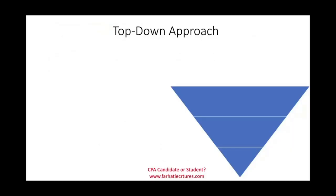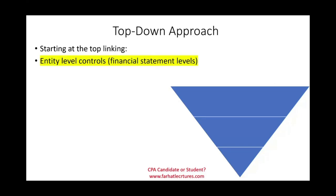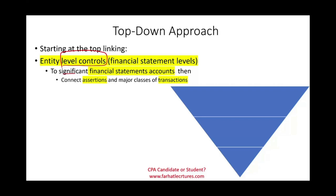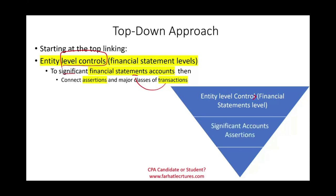The top-down approach starts at the top and links entity-level controls — controls that cover everything in the company at the financial statement level — down to significant accounts. We then connect those significant accounts to their assertions, and the accounts are generated from transactions. So we start at the top, look at the most important entity-level controls, drill down to the important accounts, examine their assertions, and then look at the major classes of transactions: entity level controls → significant accounts and assertions → classes of transactions.